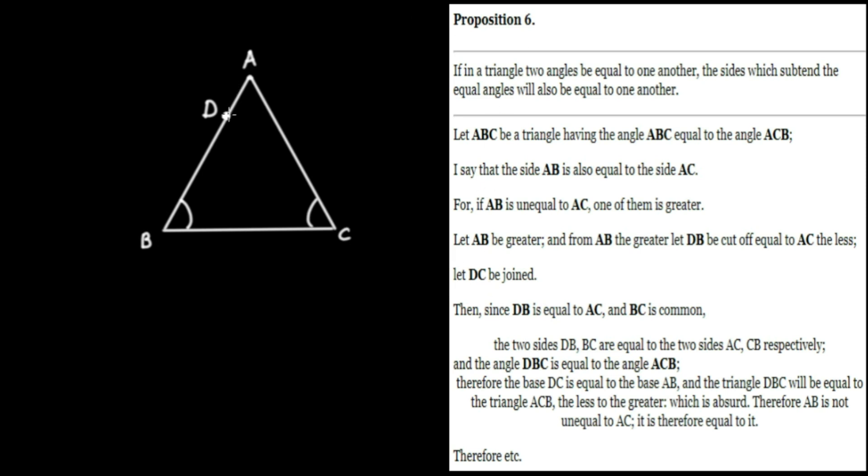So let's draw that in. And recall what's going on here. DB is going to be equal to AC. That's what we can do under the supposition that AB is greater than AC. And recall we can do this from proposition 3 by construction. Let's see what also follows from this.